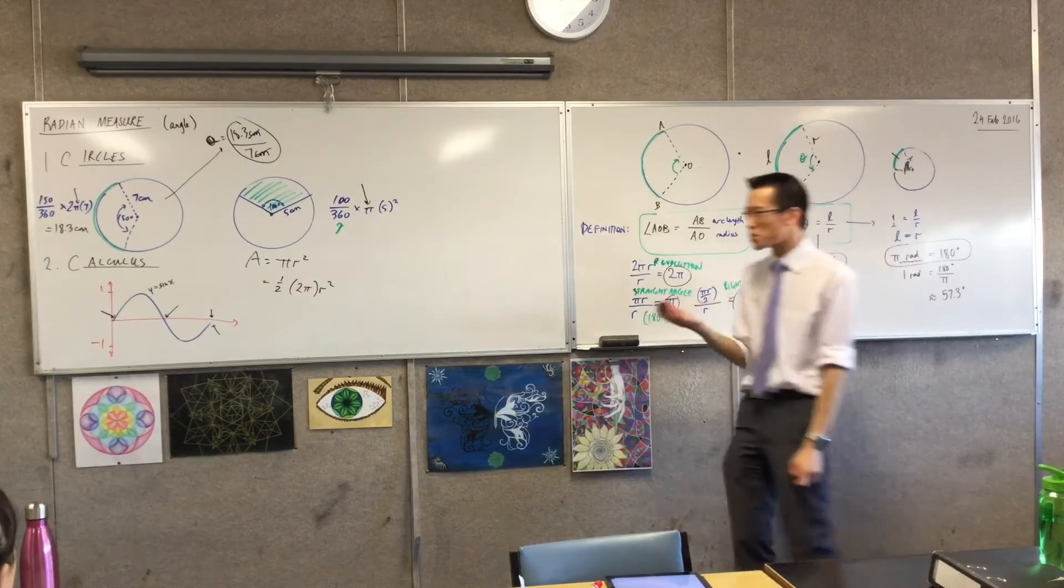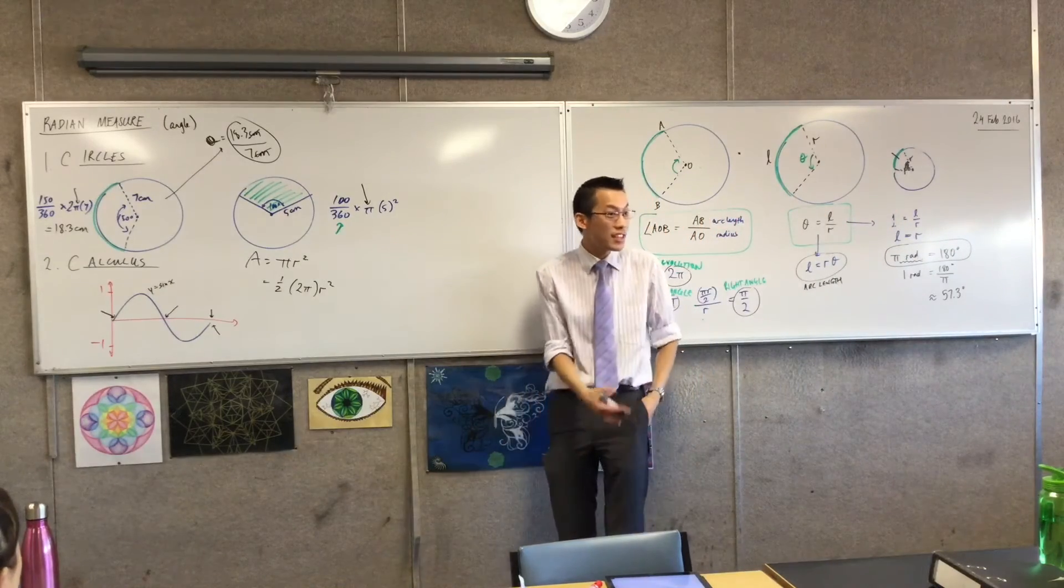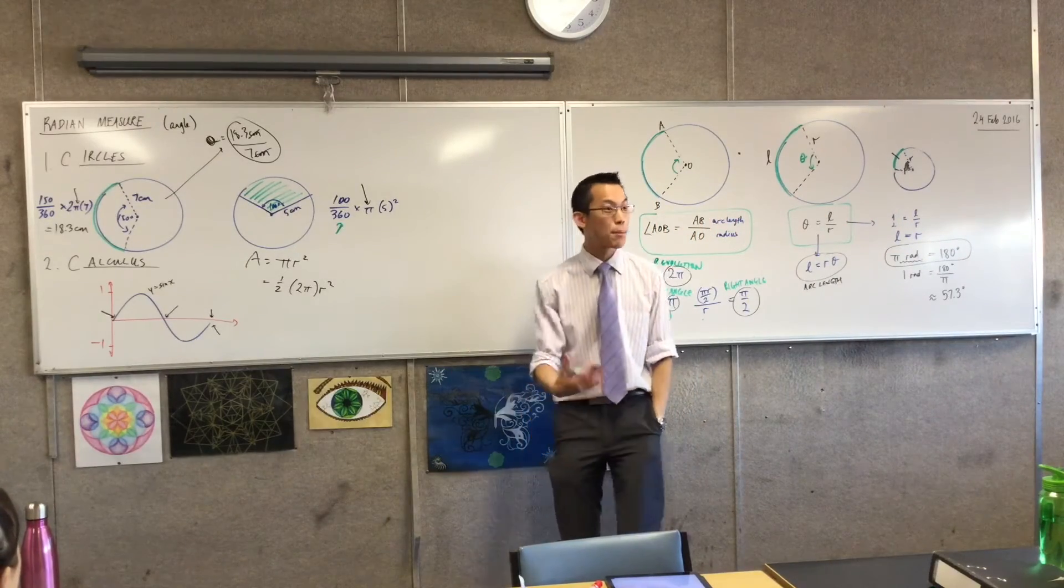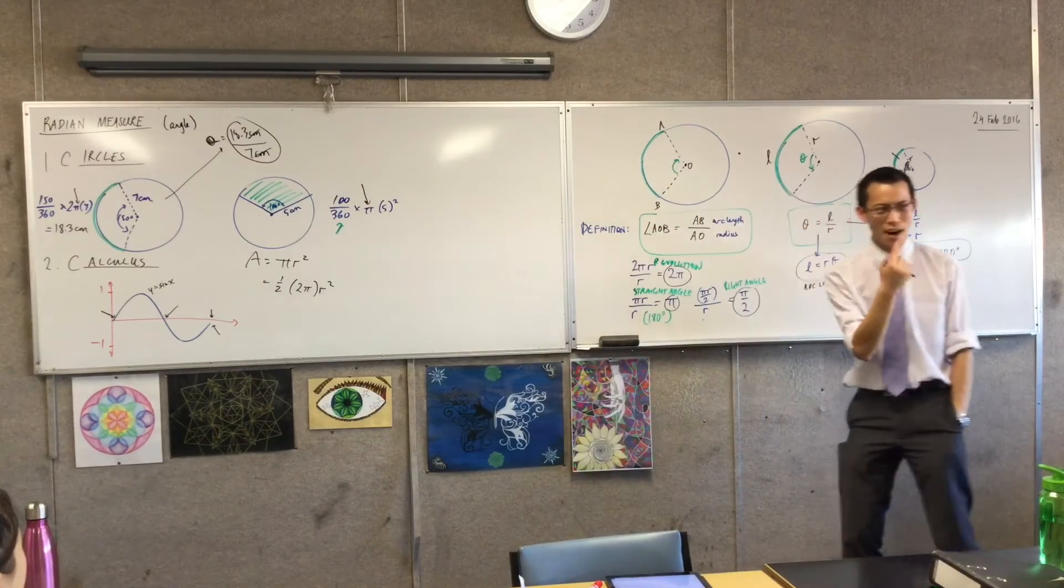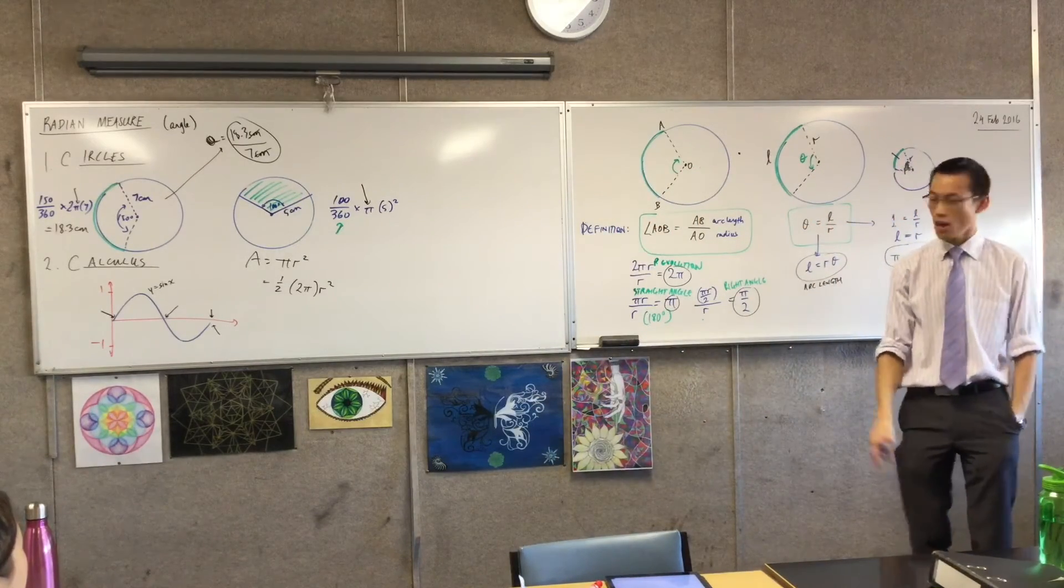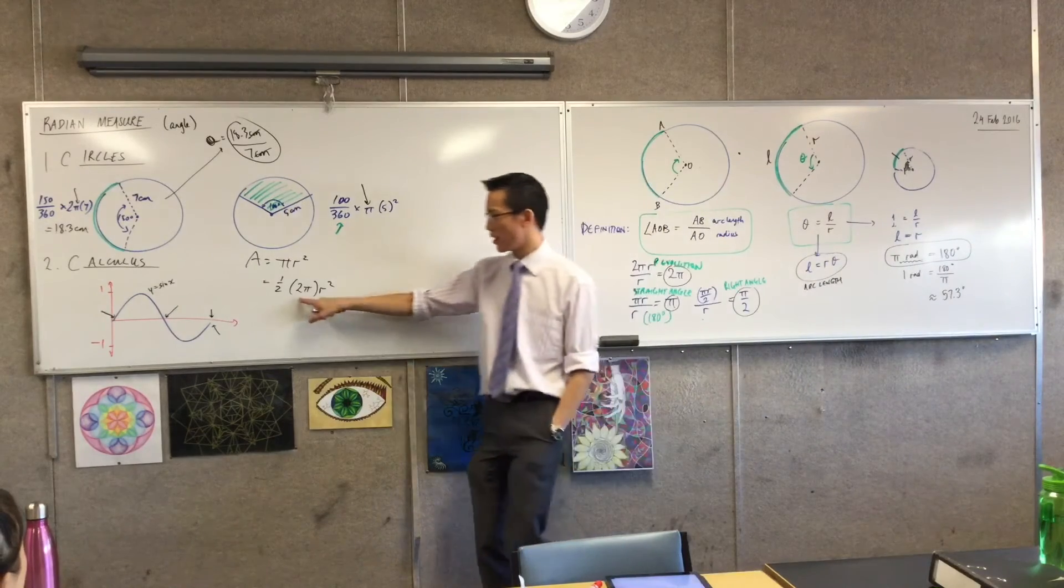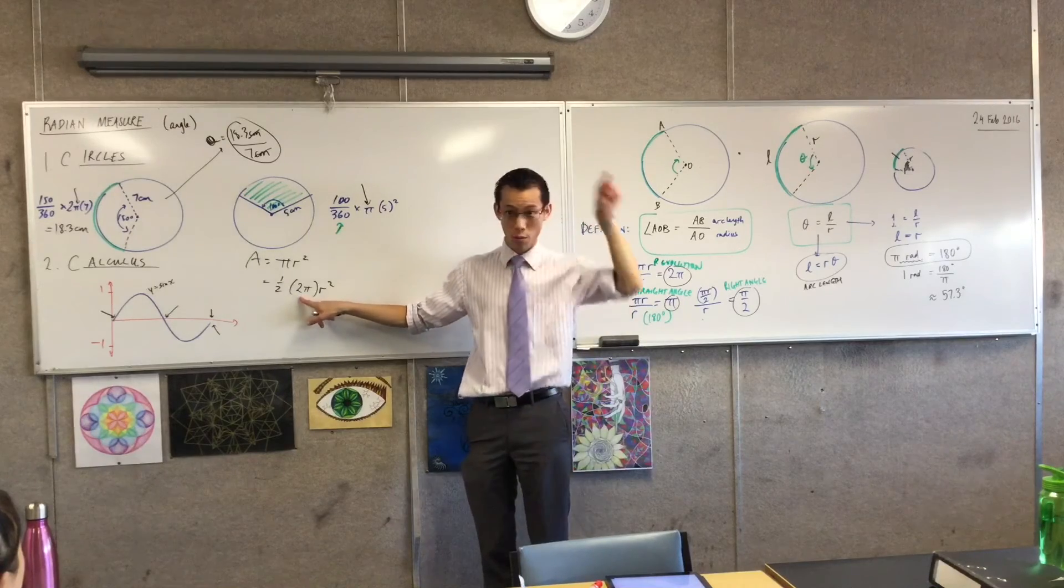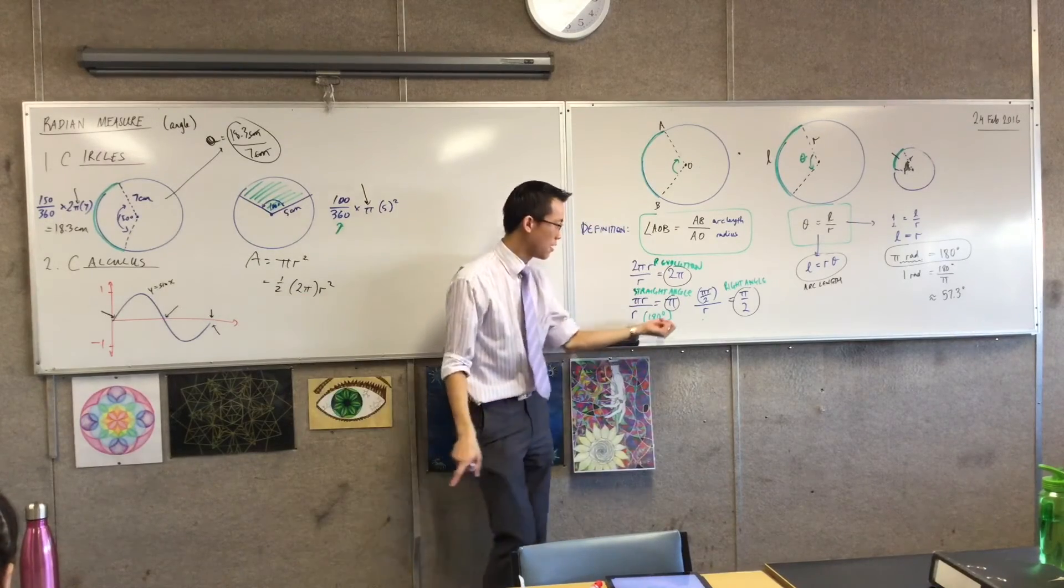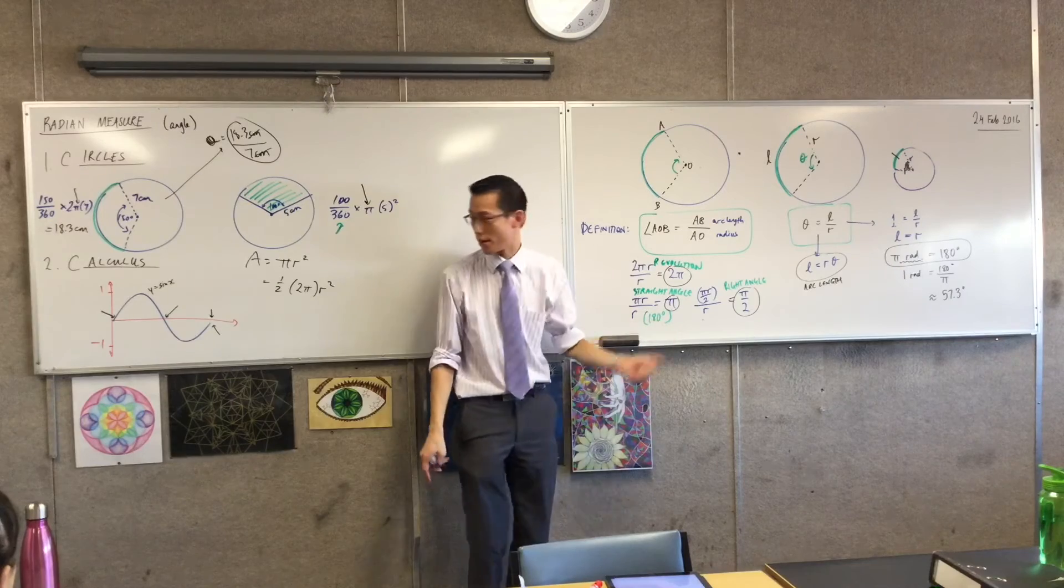Okay. So if I didn't want 2 pi, if I wanted a different angle, right? Like a different proportion of the circle, how would I do this? What if I wanted just like half of the circle instead of the entire thing? What angle would I substitute in here? And the answer is, instead of 2 pi, which takes me all the way around, I'm going to substitute in pi, which is just halfway around, right?